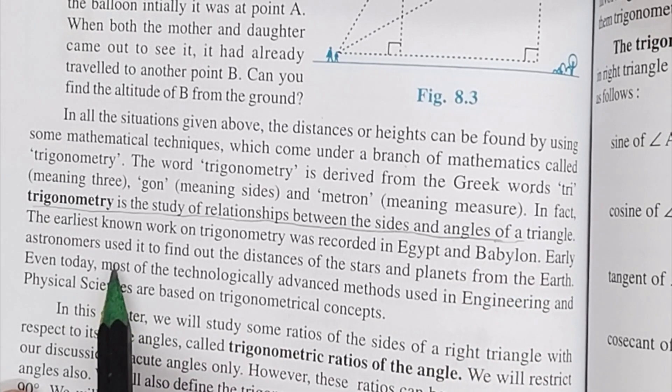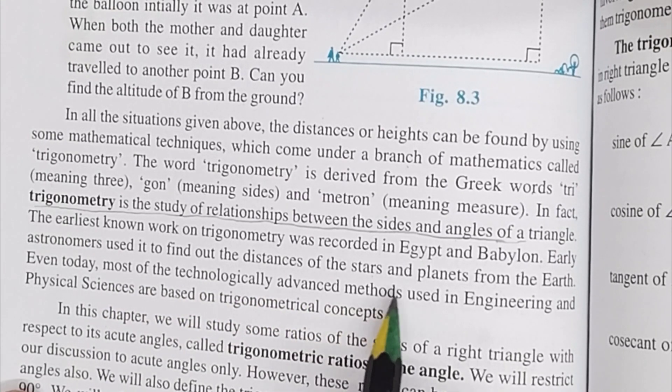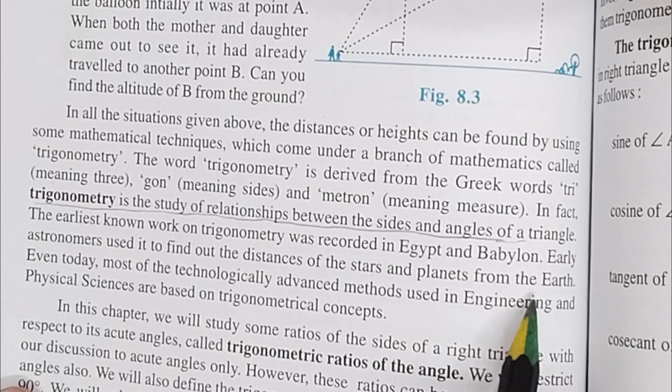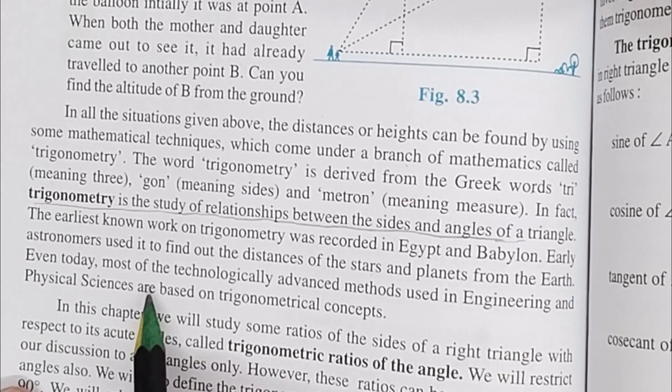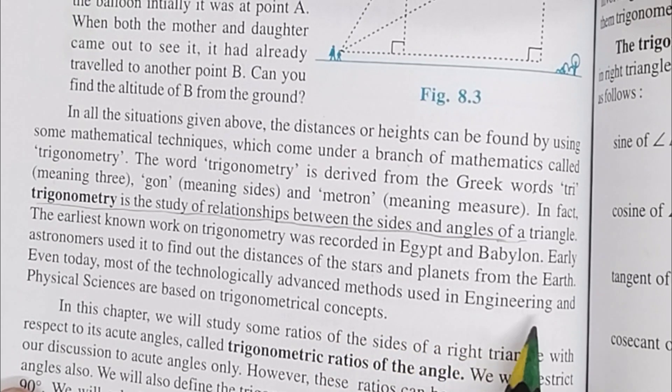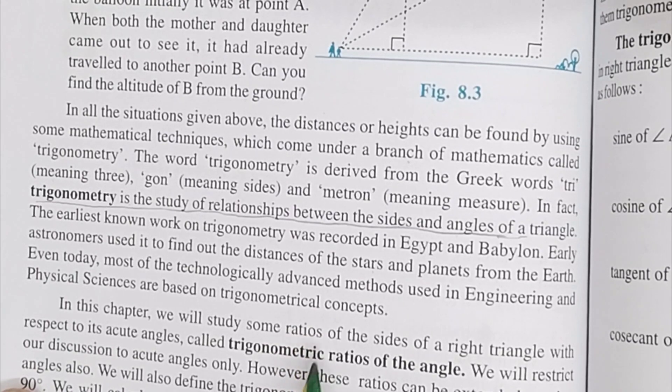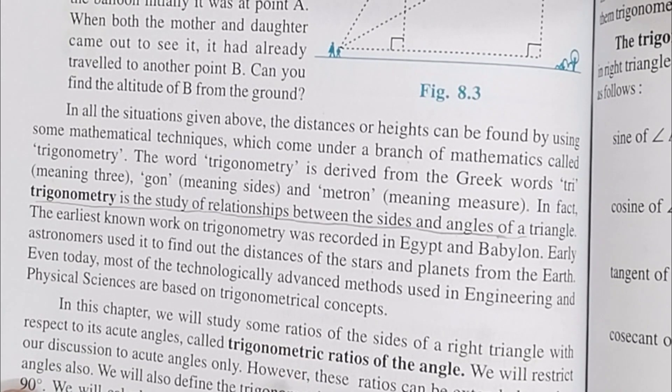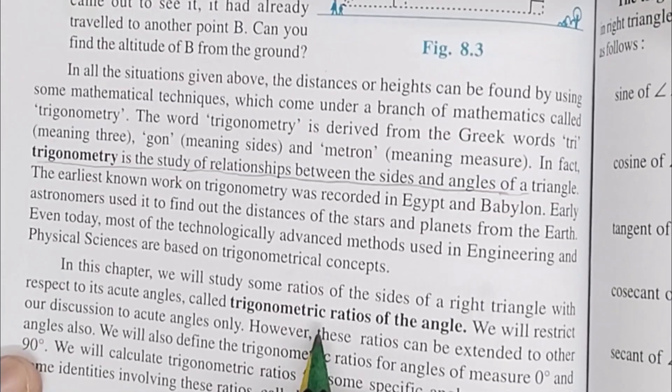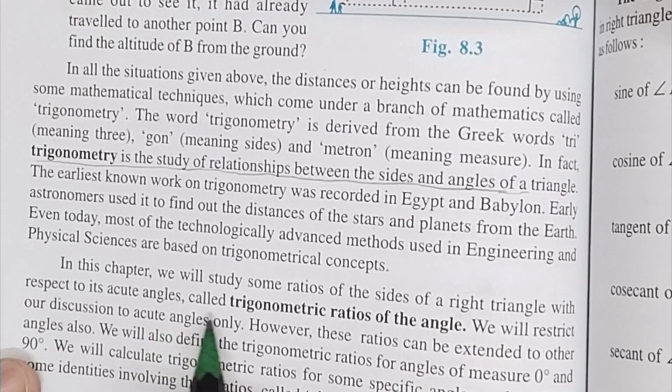In olden times, astronomers were used to find out the distances of stars and planets from the Earth. Even today also, most of the technologically advanced methods used in engineering and physical sciences are based on trigonometrical concepts.